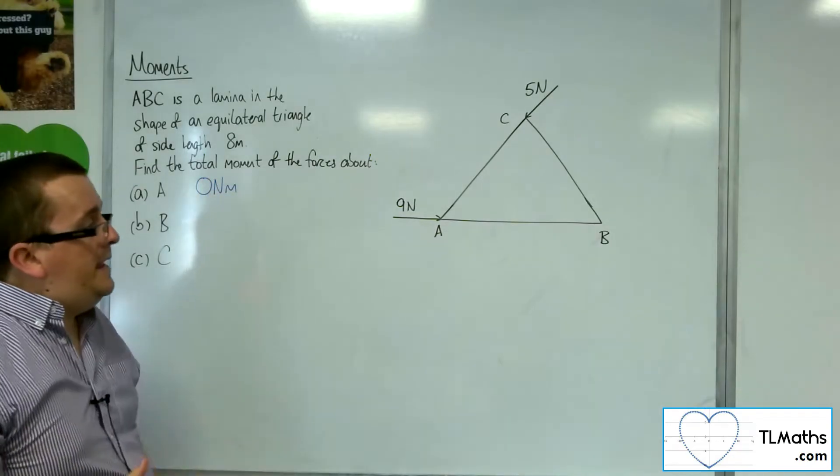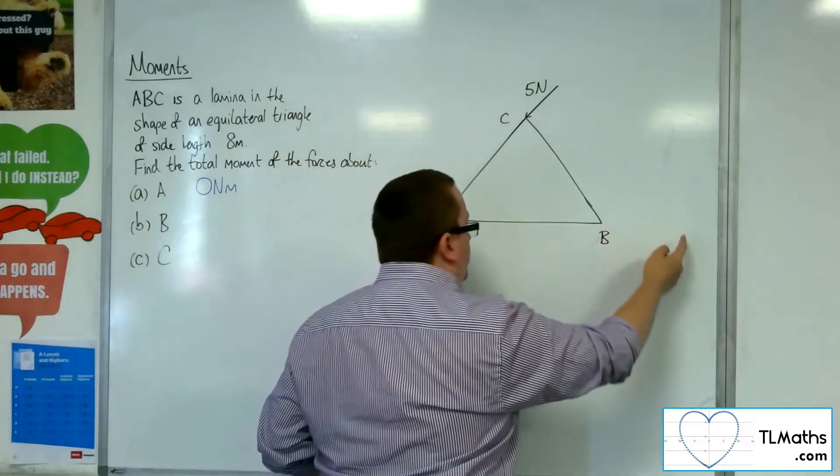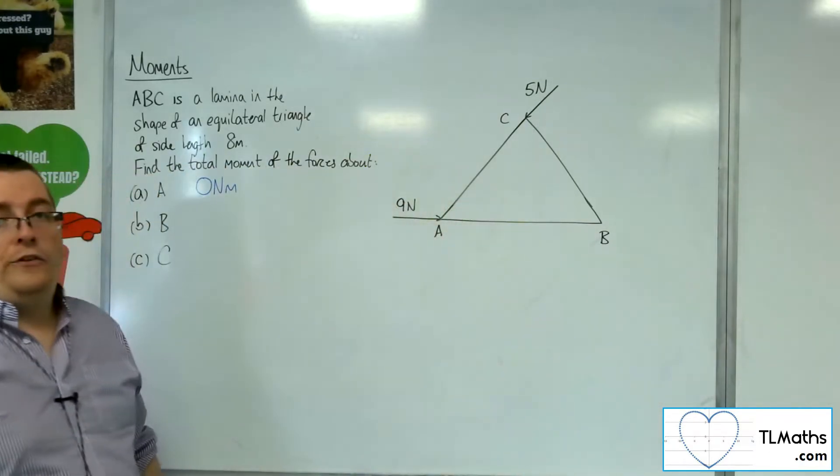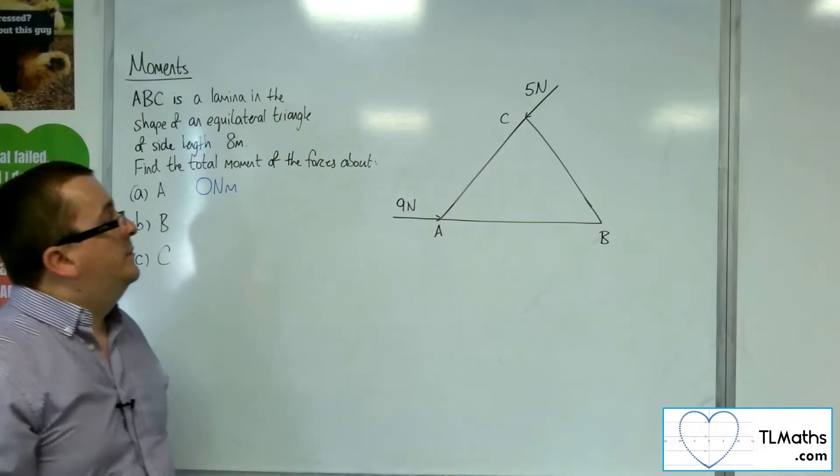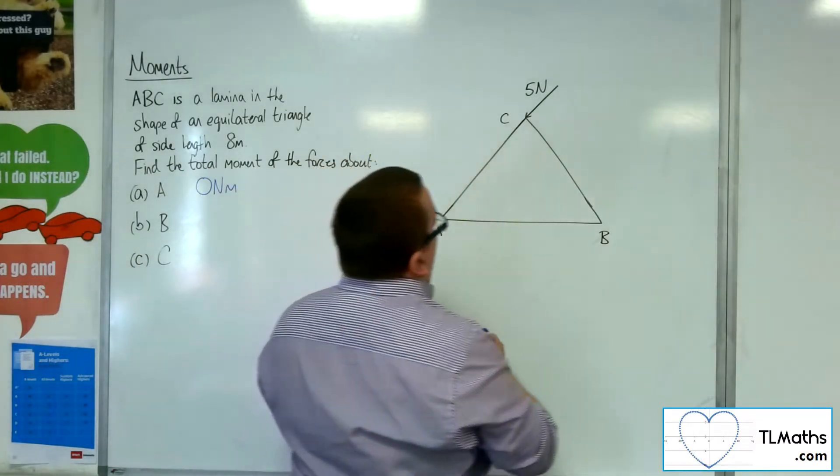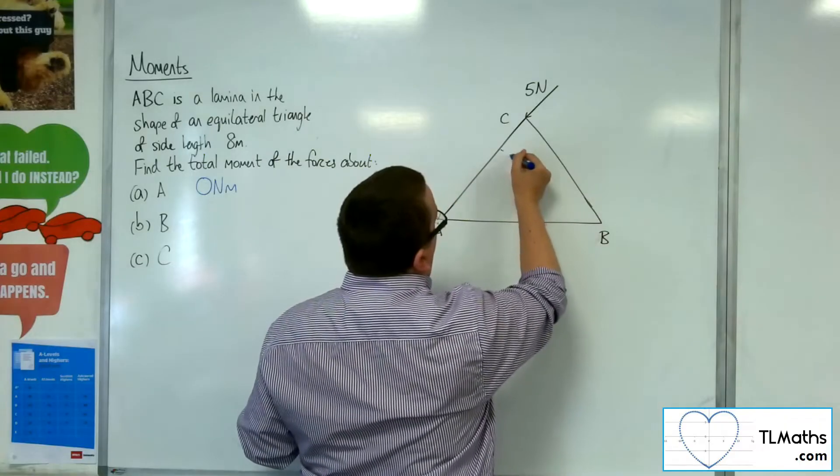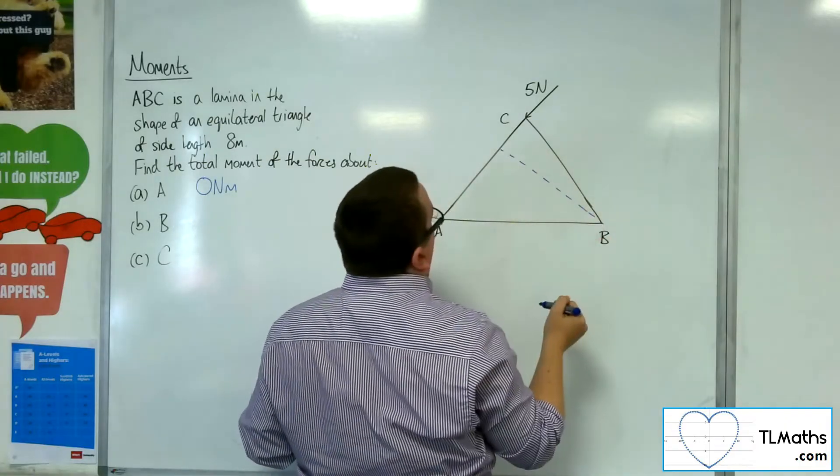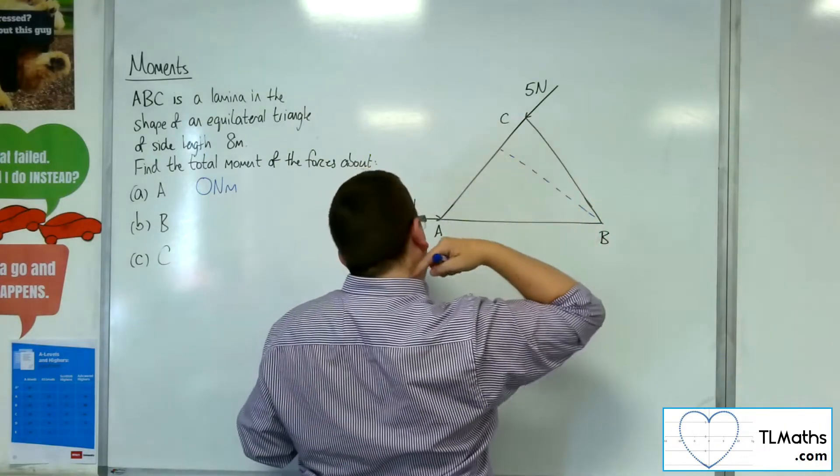Now, as for B, the 9 newton force goes through B, and so that won't affect it. However, C doesn't. And so what we can do is if we drop a perpendicular from B to that line, to that base,